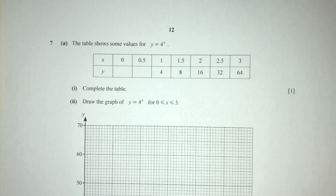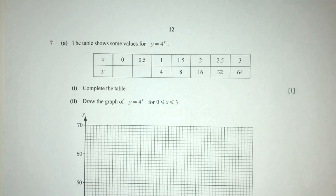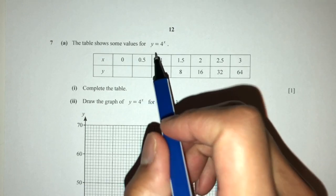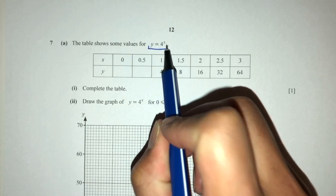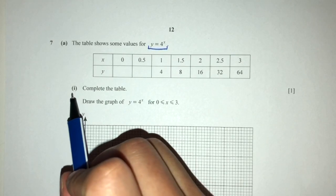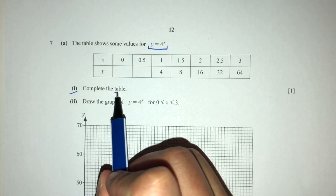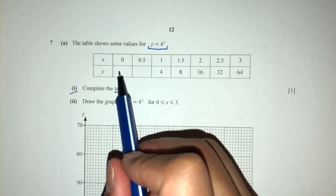Let's do this example from the paper May-June 2020 of Paper 2-2. Here we have a table showing some values on y = 4^x. They will give you an equation, so here we have y = 4^x. For part 1, we have to complete the table. As you can see, there are two values missing.